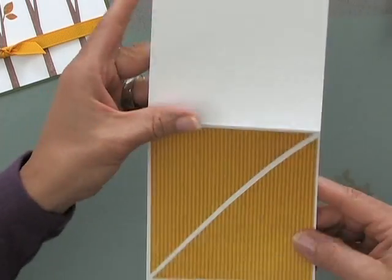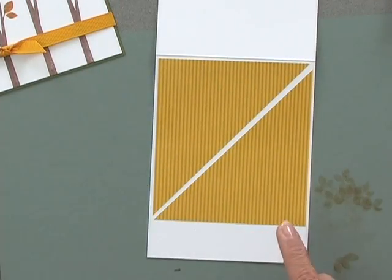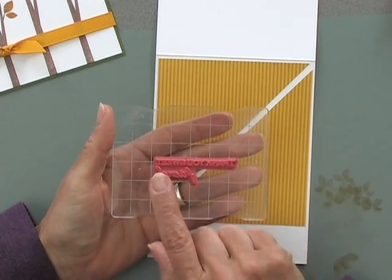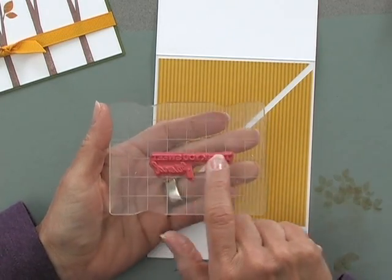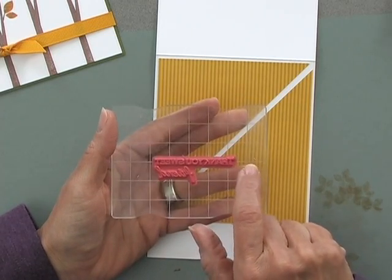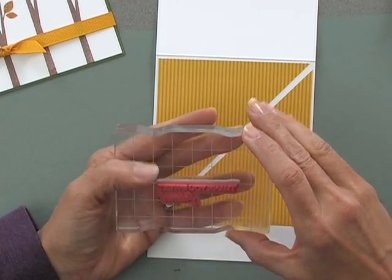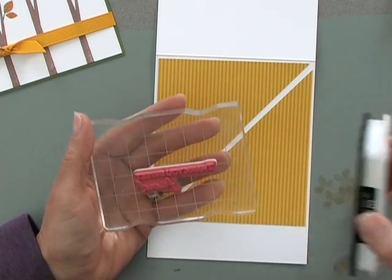And then my final stamping part here is the greeting. What I've done is I've taken the greeting and to make sure that I can get it straight, I've just lined up the greeting itself with one of the lines on the block. This way I know that when I stamp it, if it looks straight on the line, it's going to stamp straight.